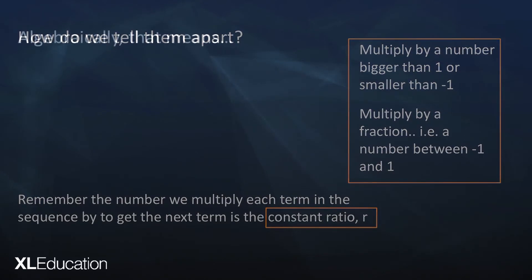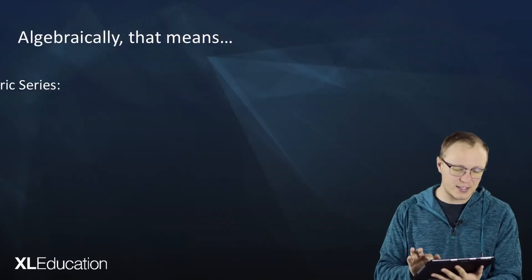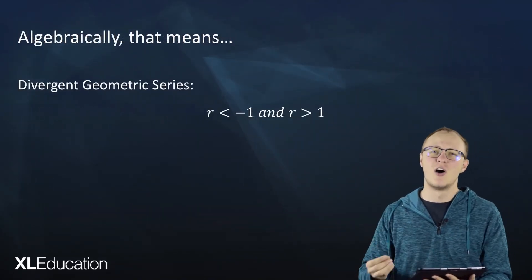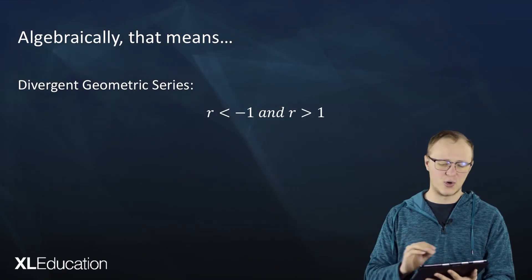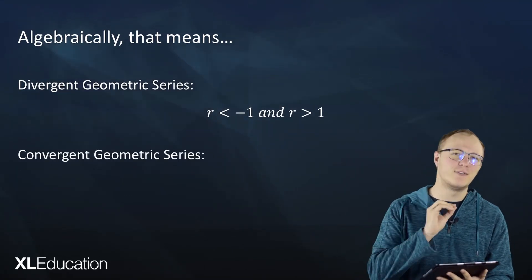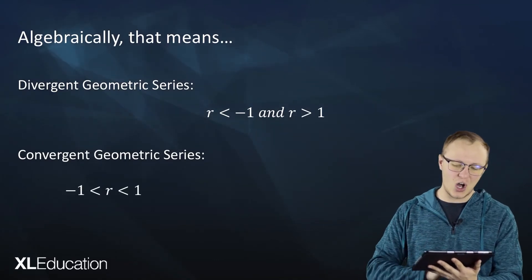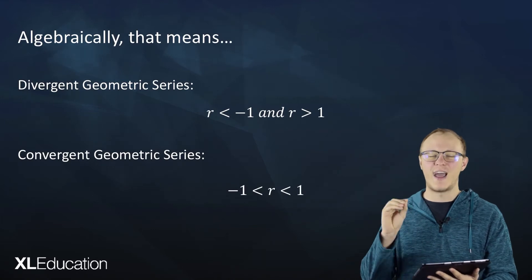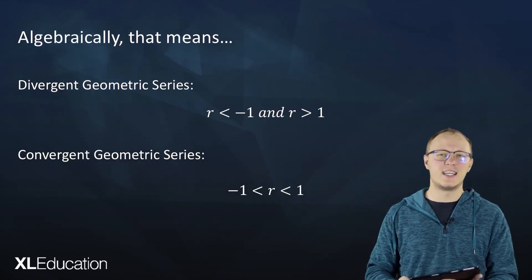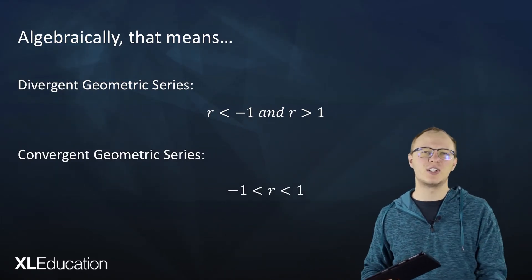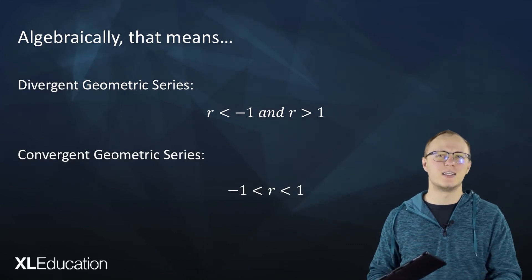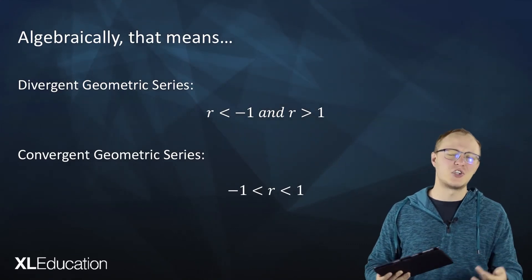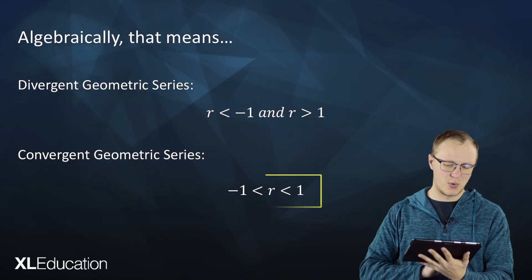So how do we apply that? For a divergent geometric series, r is less than negative 1 or greater than 1. But for a convergent geometric series, r is between negative 1 and 1. We can identify a convergent geometric series just by finding the ratio r and checking whether it lies between negative 1 and 1.